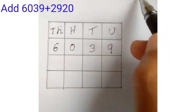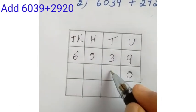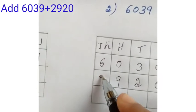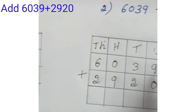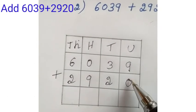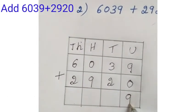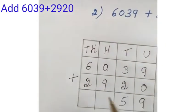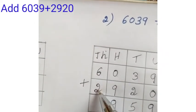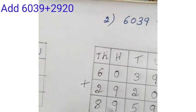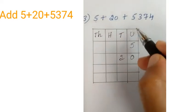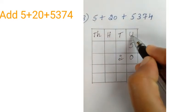Example 2: First number — unit place 9, tens place 3, hundreds place 0, thousands place 6. Second number 2920 — unit place 0, tens place 2, hundreds place 9, thousands place 2. Now add both. Start from unit place: 9 plus 0 is 9. Tens place: 3 plus 2 is 5. Hundreds place: 0 plus 9 is 9. Thousands place: 6 plus 2 is 8. That gives 8959.